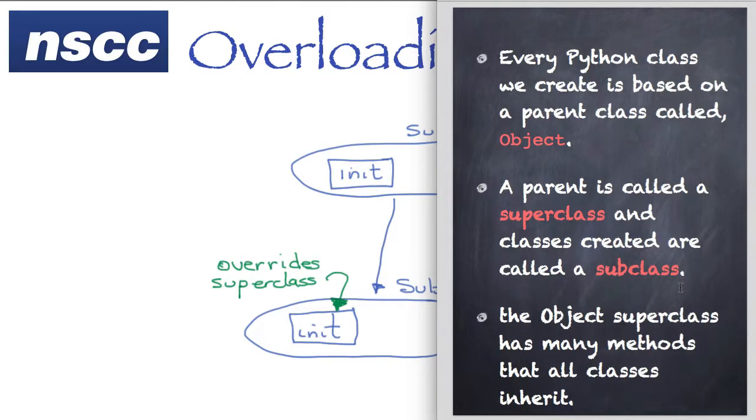Let's talk about classes and superclasses. Every Python class is based on a parent class, and at the very top of the whole hierarchy is a parent class called object. Everything inherits from object. The parent class is called a superclass, and classes created from a parent are called a subclass.